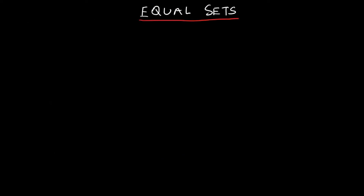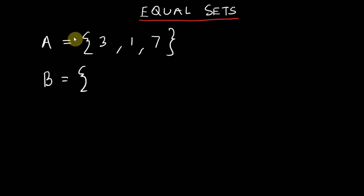Let's talk about equal sets. Two sets are called equal when they have the same elements. Suppose A and B are two sets — if the elements of A are in B and the elements of B are in A, they are called equal sets. For example, if A = {3, 1, 7} and B = {1, 3, 7}, since they have the same elements, they are called equal sets.